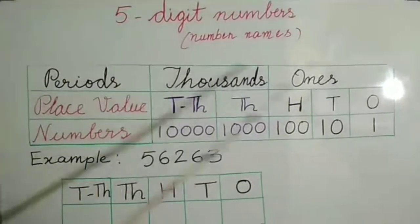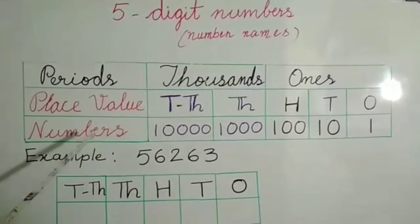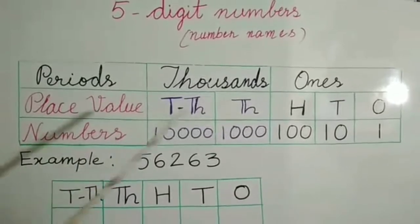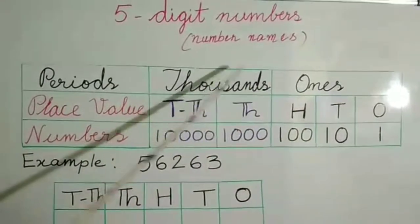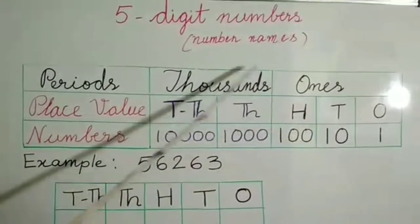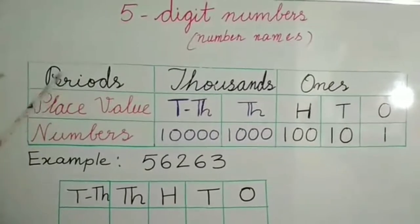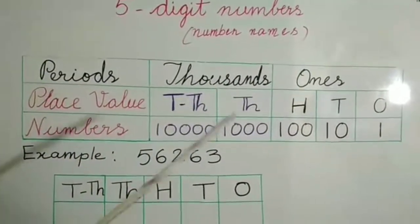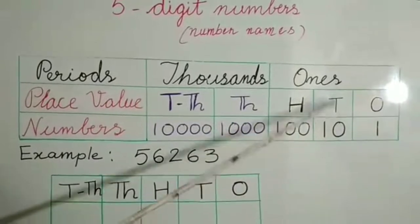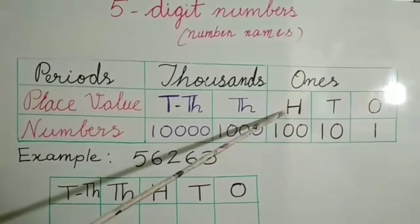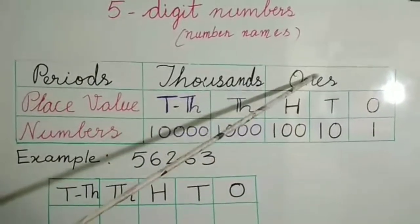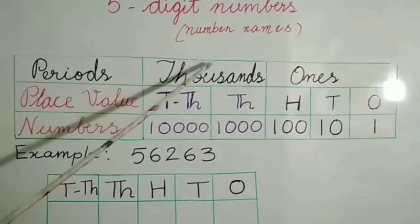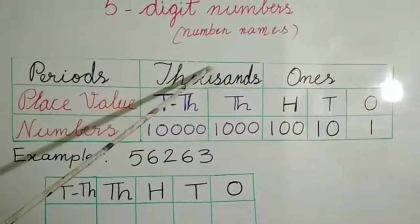This is a place value chart. In the place value chart, the numbers are divided into 2 main columns called periods. The ones period includes ones, tens, and hundreds. The thousands period includes thousands and ten thousands.